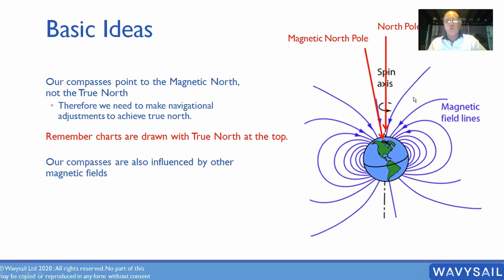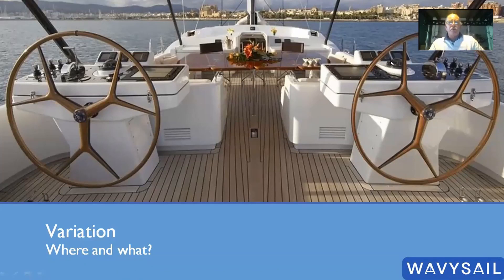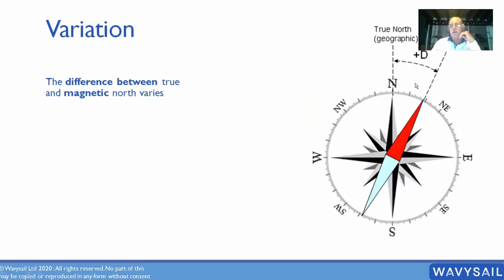Variation — where and what is it? It's the difference between true and magnetic north. In different parts of the world it's completely different. Variation is always measured from north; you don't have a southerly variation. It varies by location and over time.